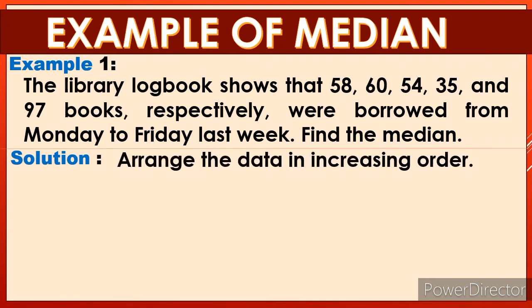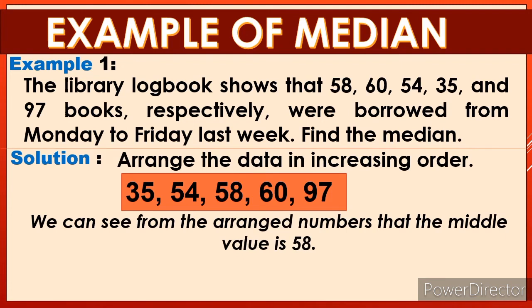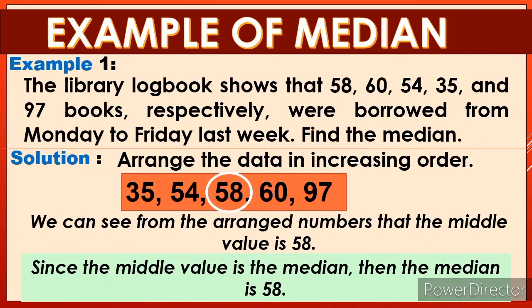The solution: we are going to arrange the data in increasing order — from the lowest number upward. We have: 35, 54, 58, 60, 97. We can see from the arranged numbers that the middle value is 58. Since the middle value is the median, the median is 58.